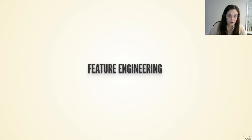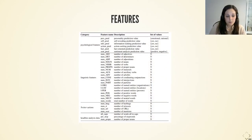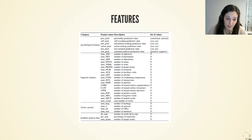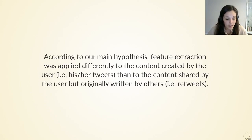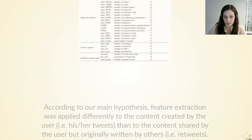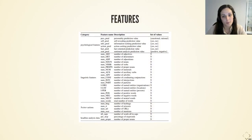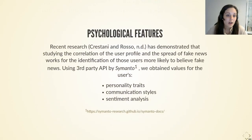Now I'm going to talk about the features that we obtained. Here you can see an overview of the complete set of features that we used for training. They are divided into four categories that I will explain now. I wanted to remind you that these features were extracted according to our hypothesis and were therefore applied differently to tweets than to retweets. I will tell you, in each of the categories, which ones were applied to which sets of texts.